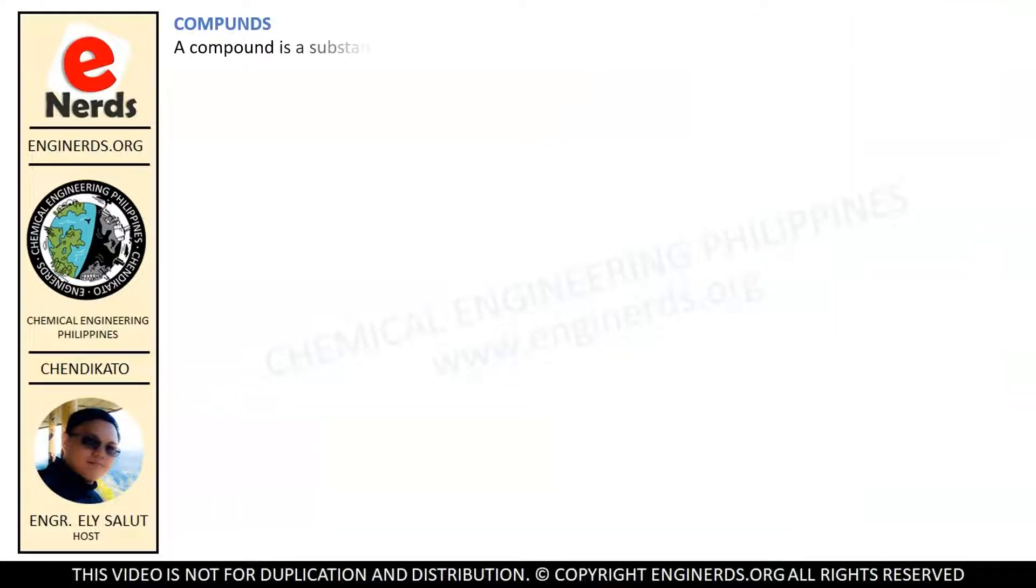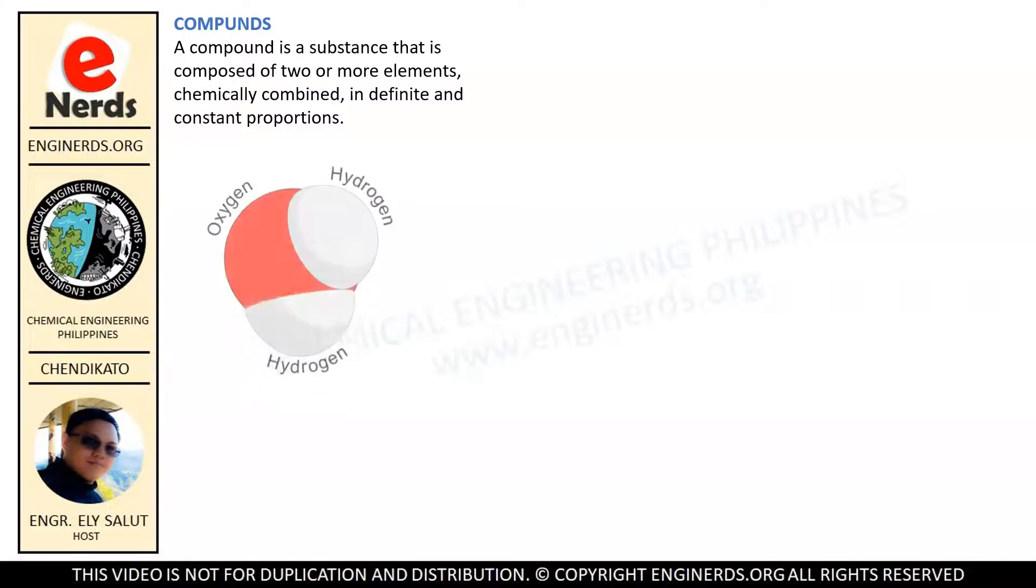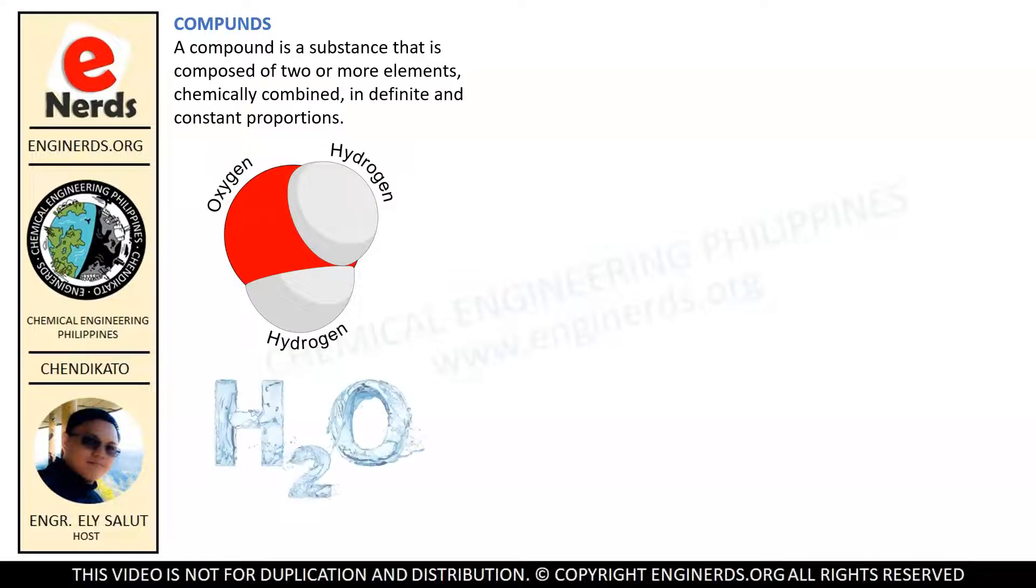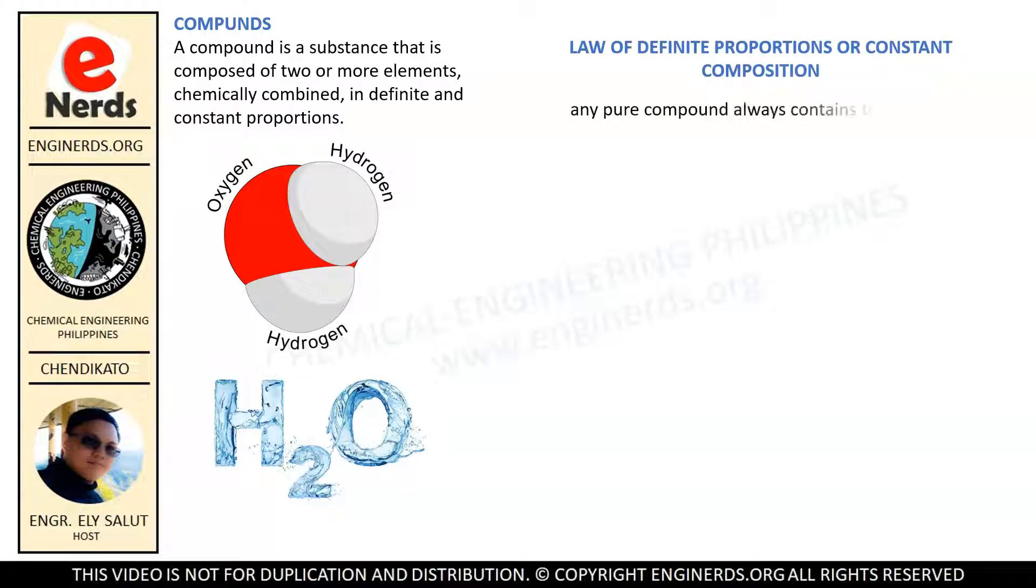A compound is a substance that is composed of two or more elements chemically combined in definite and constant proportions. The formula for a compound gives the elements or atoms that it is composed of and the relative proportions of these atoms. For example, the compound water is composed of two atoms of hydrogen and one atom of oxygen. Therefore, the formula for water is H2O. The law of definite proportions, or constant composition, states that any pure compound always contains the same elements in exactly the same proportion by mass.